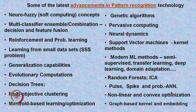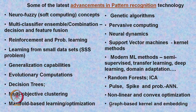Additional advanced topics include pulse, spike, and probabilistic neural networks, nonlinear and convex optimization, manifold-based learning, and graph-based kernel and embedding methods used in structural and syntactic pattern recognition — areas not covered in this introductory course.